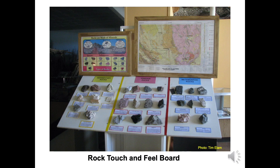There are several terms that scientists use to define hard substances that come from the earth, such as rocks, minerals, and stones. Pictured is our touch and feel board of rocks. A rock is a natural substance made of one or more minerals. Rocks make up nearly all of the earth's crust. Some common rocks are sandstone, granite, basalt, marble, and schist.